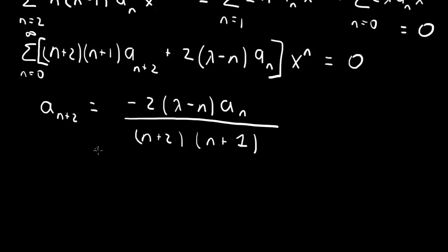We can obtain two independent series. Starting with n=0 gives a₀, then a₂, then a₄, and so on — the even series. Starting with n=1 gives a₁, then a₃, then a₅, and so on — the odd series.